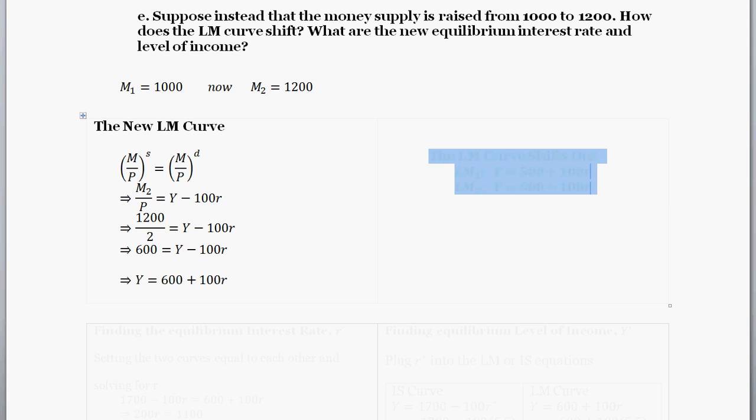So given the increase in the money supply, our initial LM curve was Y equals 500 plus 100R. Our new LM curve, LM sub 2, is Y equals 600 plus 100R. So it's a bigger number. Our LM curve is shifted out or to the right.